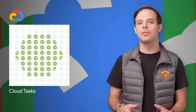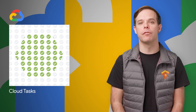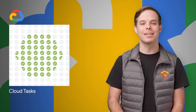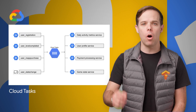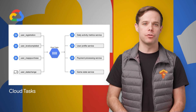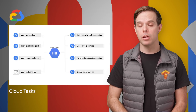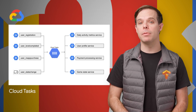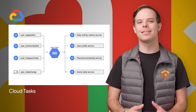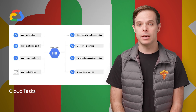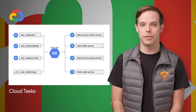Recently, we announced Cloud Tasks. It's a task queue service for App Engine Flex and second-generation runtimes that provides all the benefits of a distributed task queue, including task offloading, loose coupling between services, and enhanced system reliability. For more details and links to get started, head on over to the post.